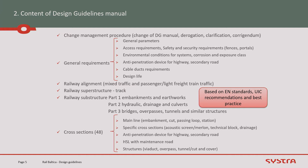We have also defined specific cross-sections for acoustic needs, hydraulic needs, technical blocks for bridges, and anti-penetration devices for highways. In cases where the access road is too far from the high-speed line, a maintenance road can be planned close to it, and we have proposed a cross-section for how to deal with that. We also have cross-sections for structures: viaduct, overpass, and tunnel. All of this is based on EN and UIC recommendations and best practices.